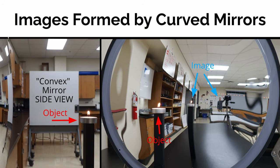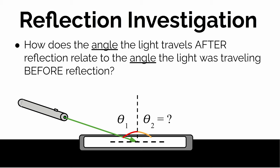Now that we've seen what kind of images concave and convex mirrors produce, we need to figure out why these mirrors produce these kinds of images and how we could predict what kind of image a mirror would produce given the distance of an object and knowing something about that mirror. In order to explain that, we first need to look at the idea of reflection: when light hits a smooth, solid surface like a mirror at a particular angle, what angle does it bounce off at?